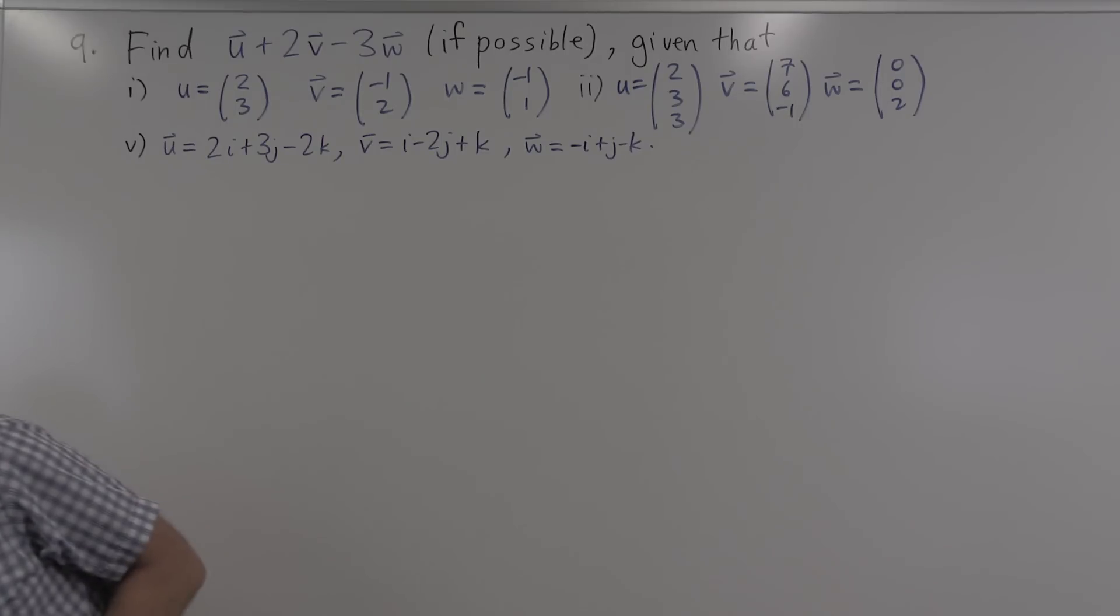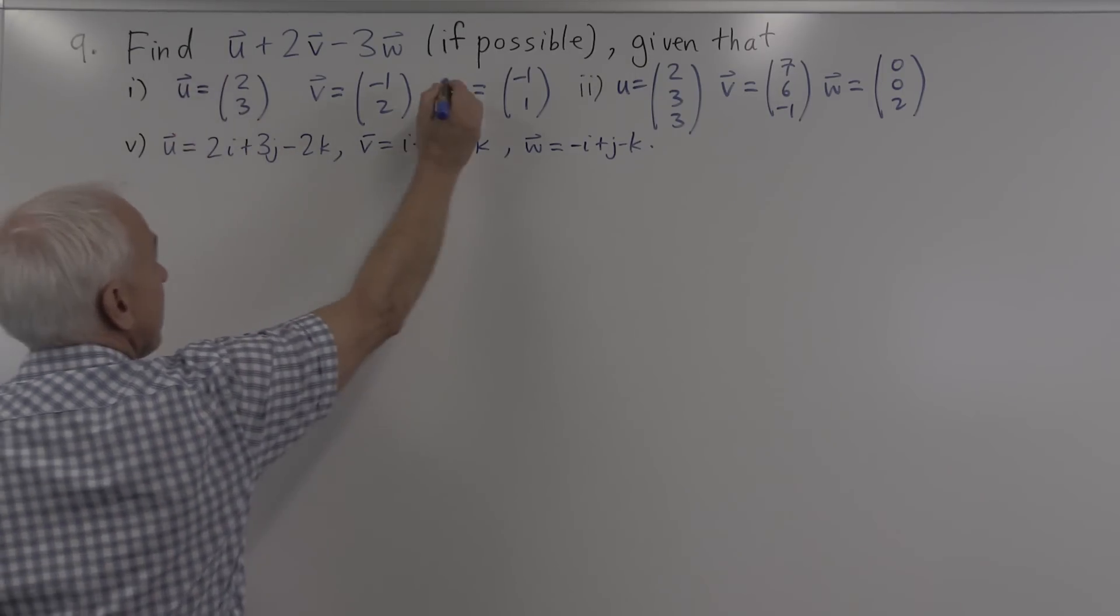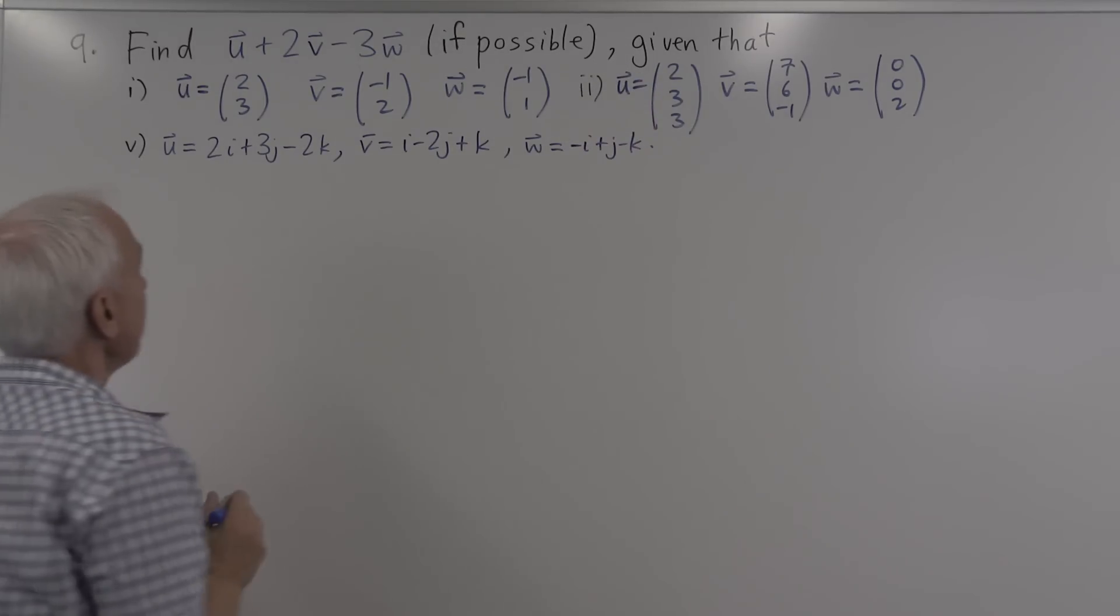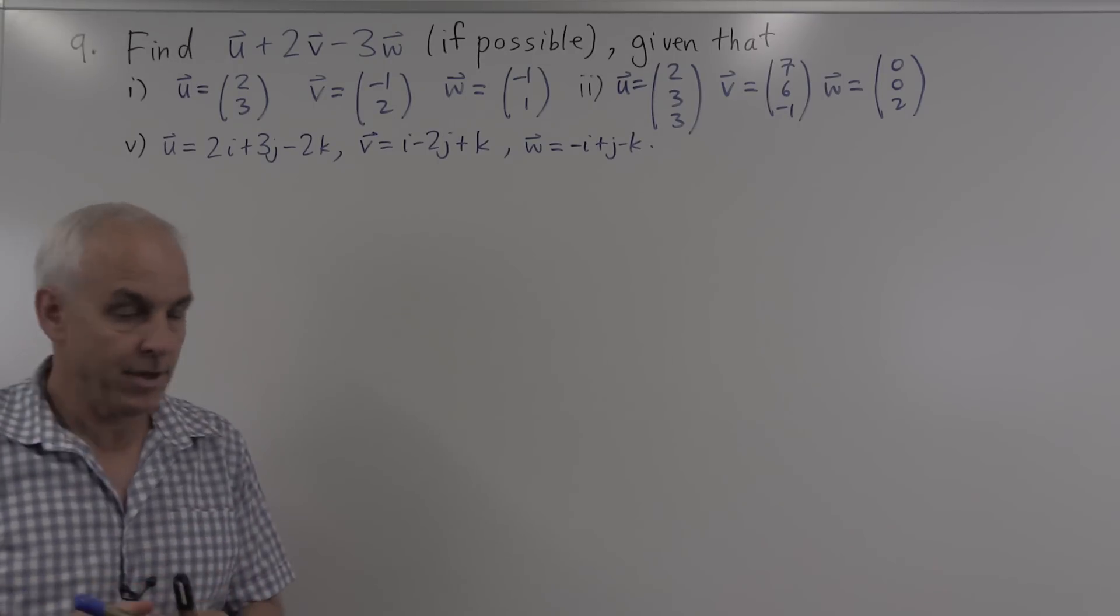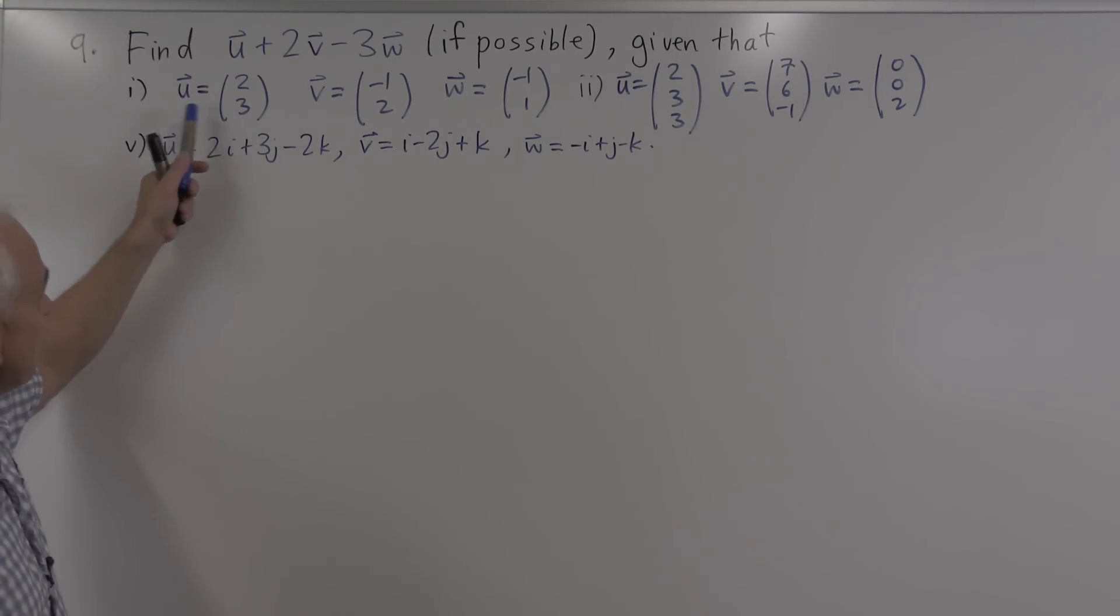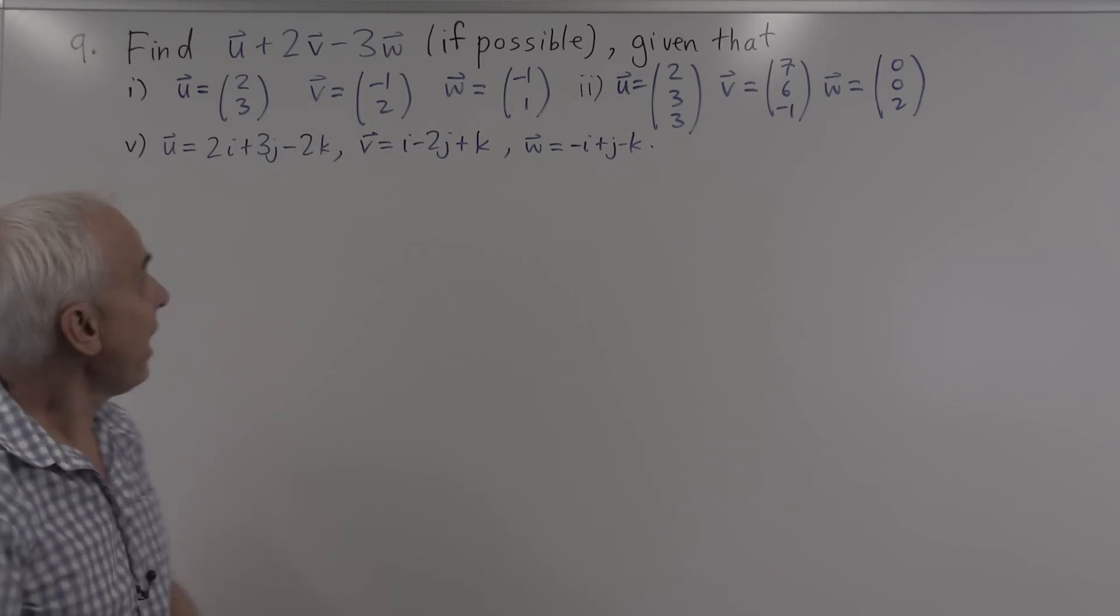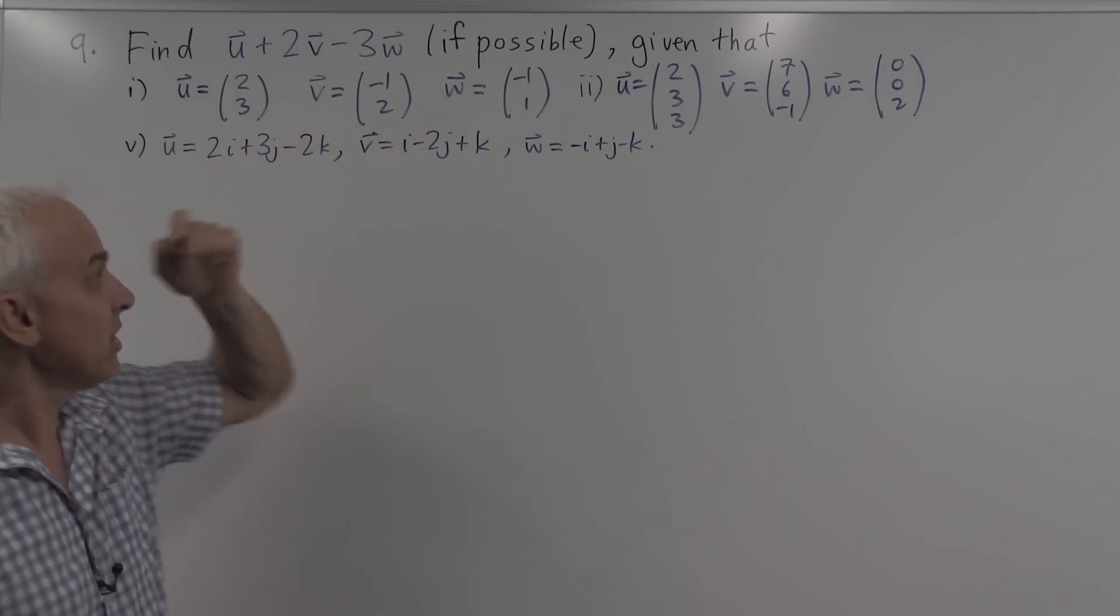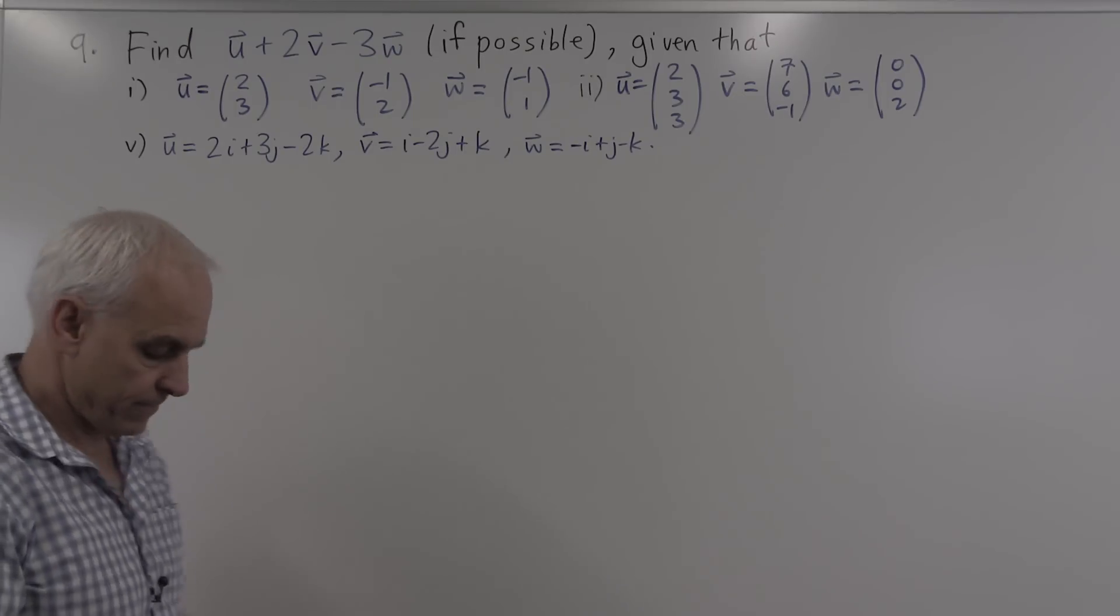All right, so let's have a look at the first question. We're talking about vectors u, v, and w. The vector u is (2,3), the vector v is (-1,2), the vector w is (-1,1), and we're asked to compute this particular combination of vectors, u plus 2v minus 3w, if possible.